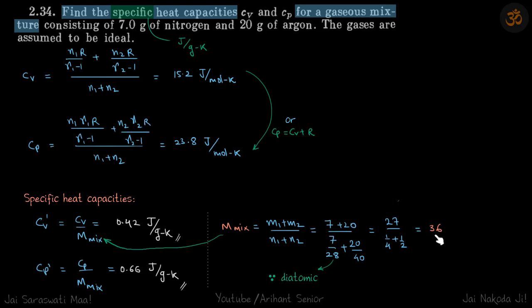So you do that and you will get the molecular mass of the mixture as 36. So we already found Cv and Cp, divide both of them with the molecular mass of the mixture and you will get your specific heat capacities, Joules per gram Kelvin.